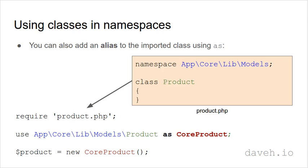You can also add an alias to the imported class using as. So if you have two classes with the same name, you can use a different one for the namespaced class. So that's how you can use namespaces to organise your PHP classes.